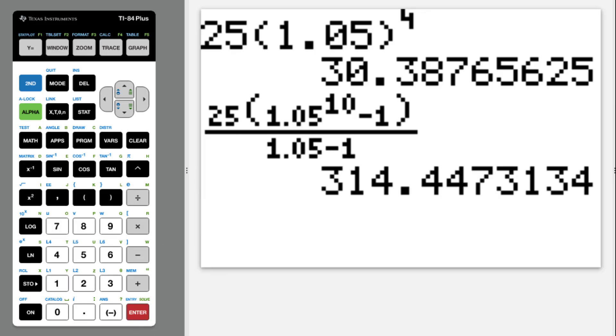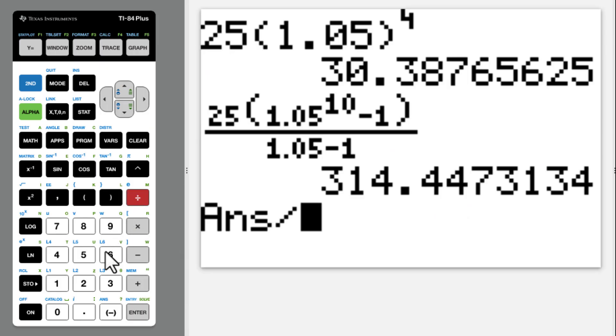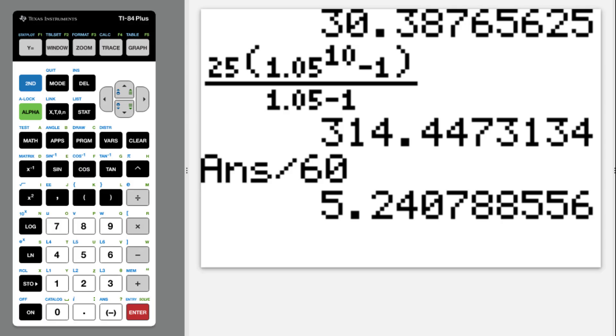314.4 seconds. This is the seconds. We are looking for minutes. So we divide it by 60. 5.24 minutes.